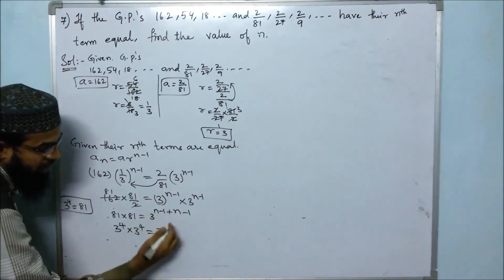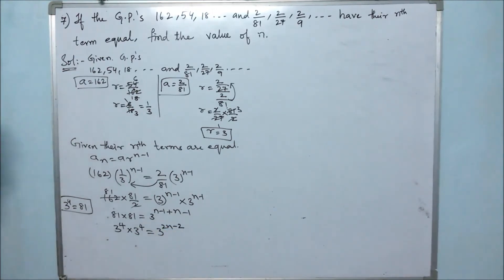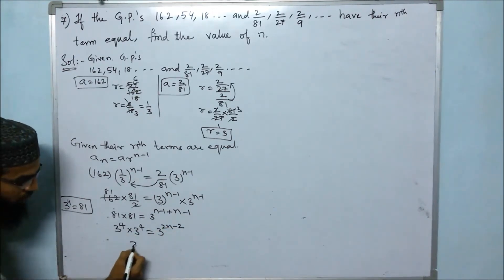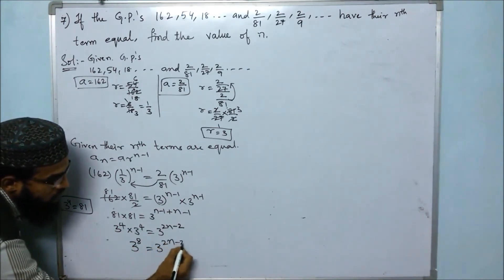So 3 to the power of 4 times 3 to the power of 4 equals 3 to the power of 8, and this equals 3 to the power of 2n minus 2. When bases are equal, powers are equal: 8 = 2n minus 2.